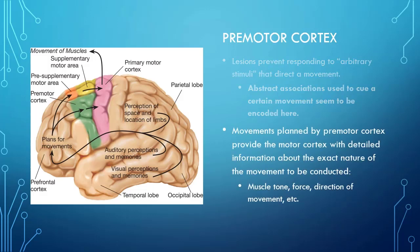The premotor cortex is also giving the motor cortex a very detailed plan. This seems to be a final step of processing for movements we're going to engage in — information about exactly how hard to swing a baseball bat, how much muscle tone to use when lifting something, or exactly how much force to put on the steering wheel to make a turn that's not too sharp. All of this very specific information seems to come through the premotor cortex.